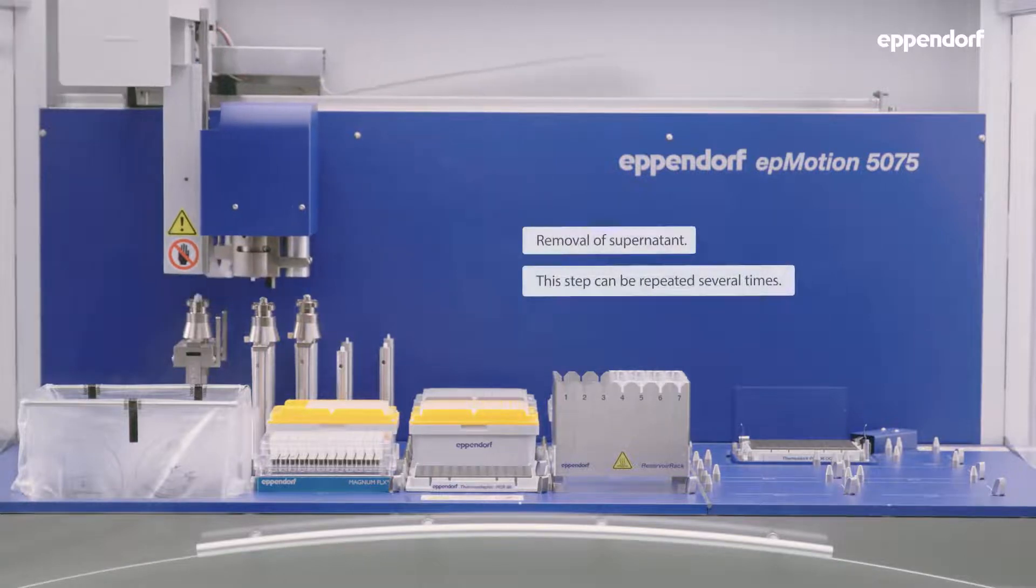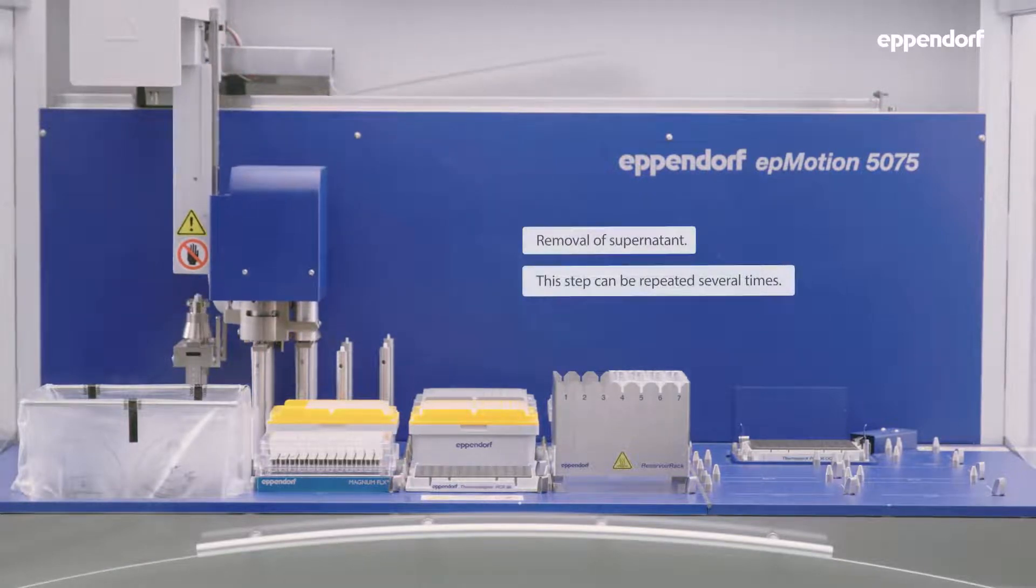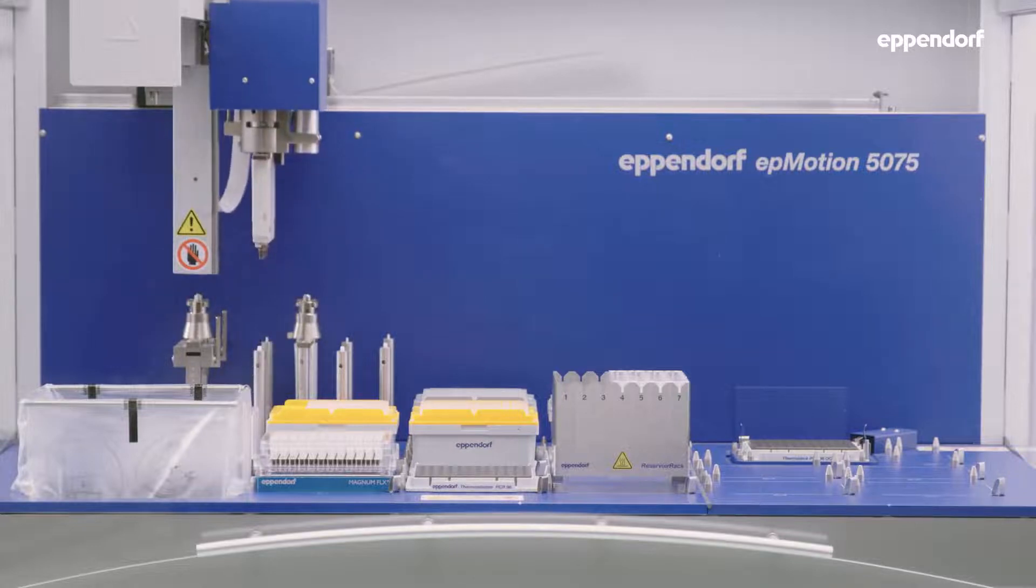After separation, the supernatant is removed to the liquid waste using a 300 µL H-channel dispensing tool.